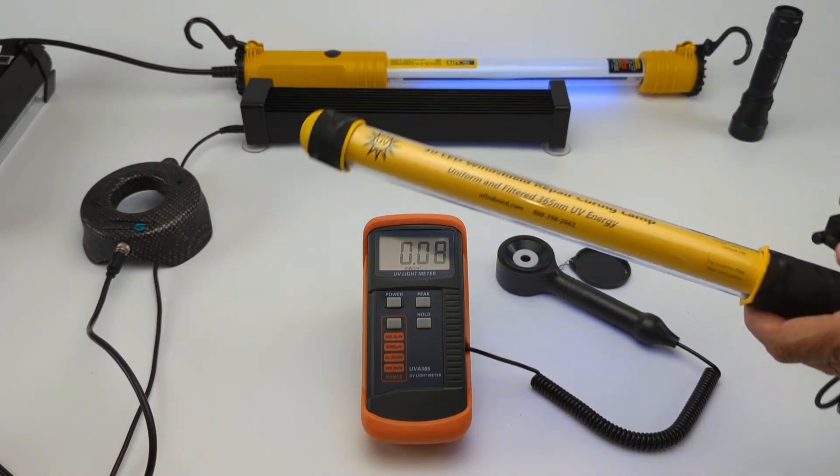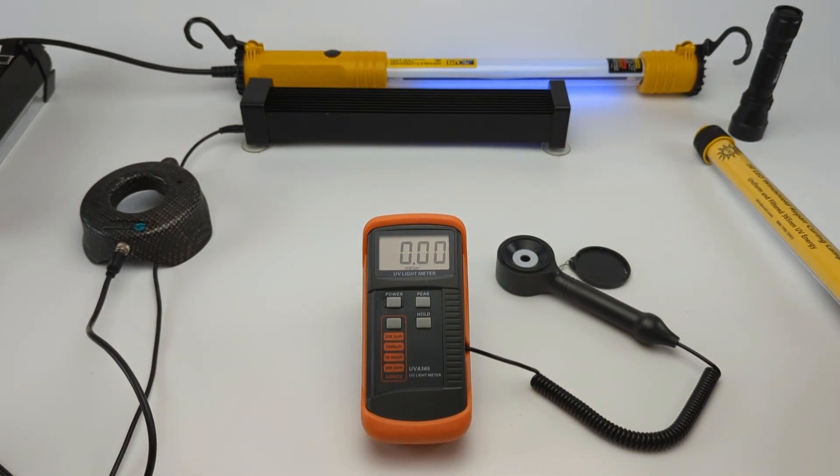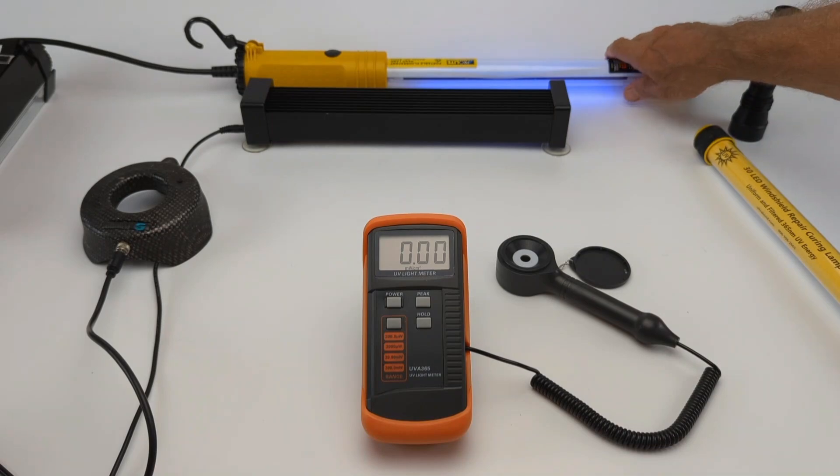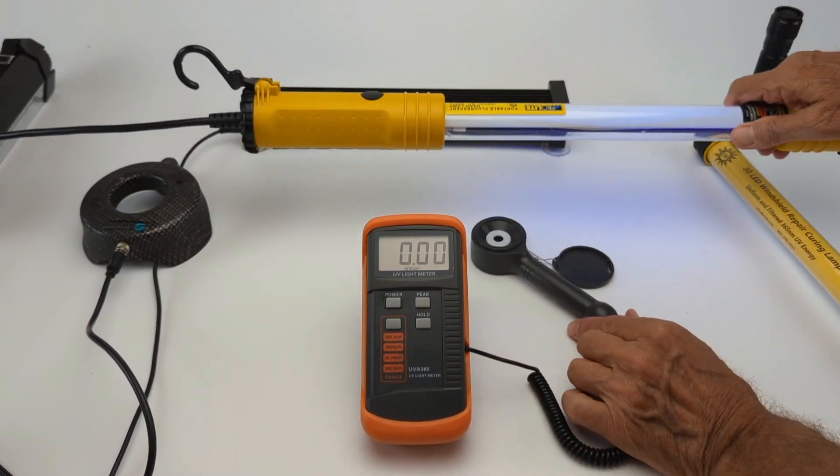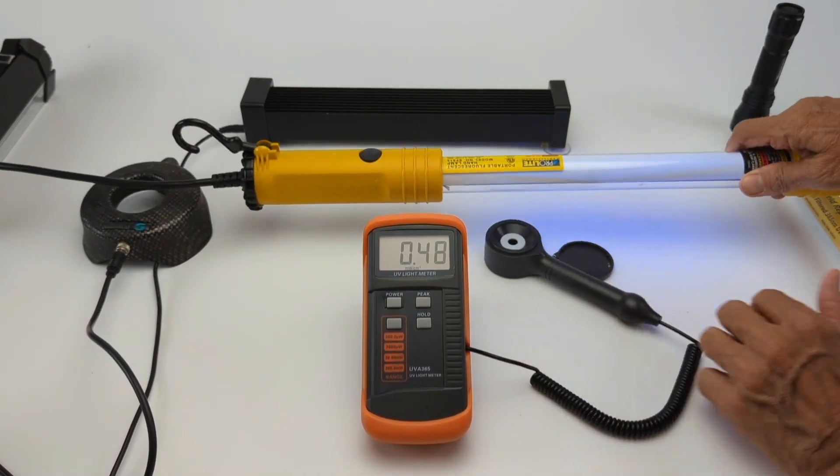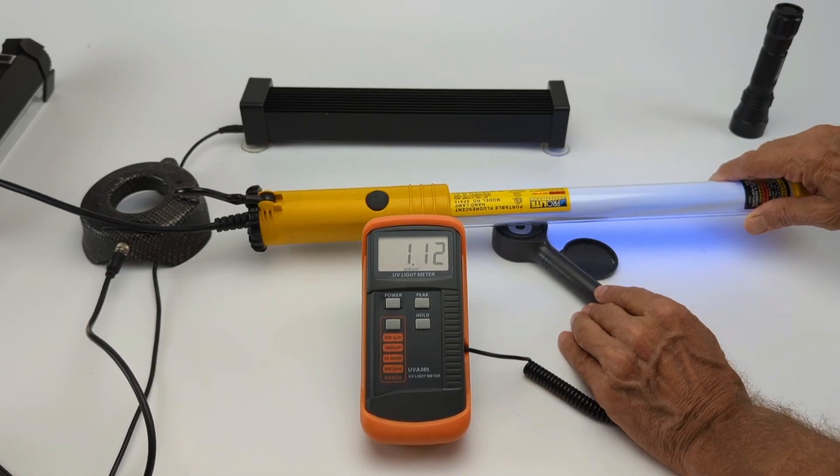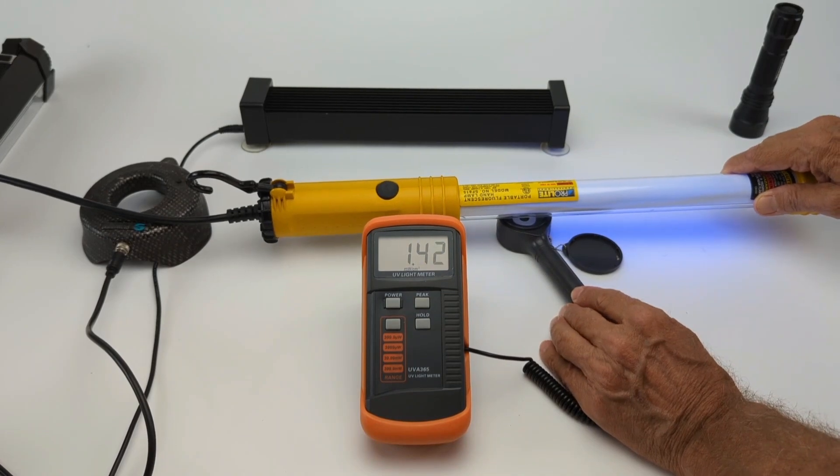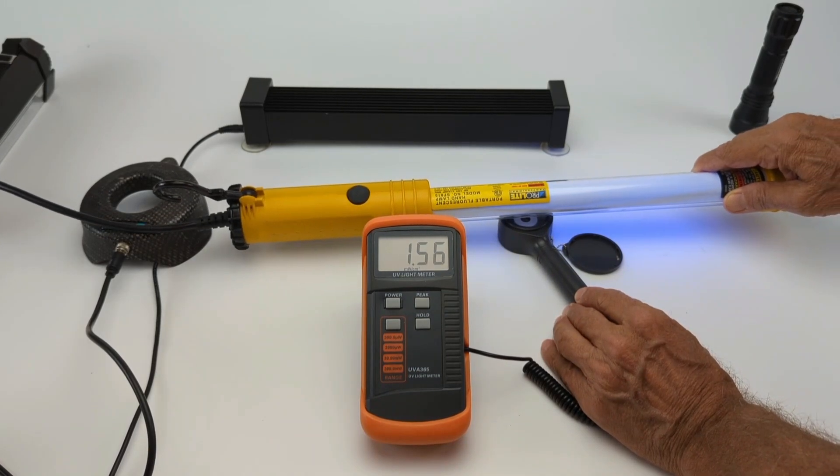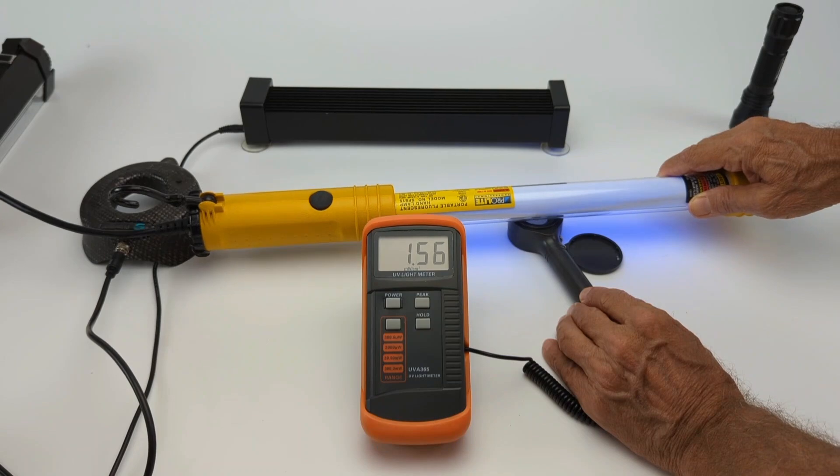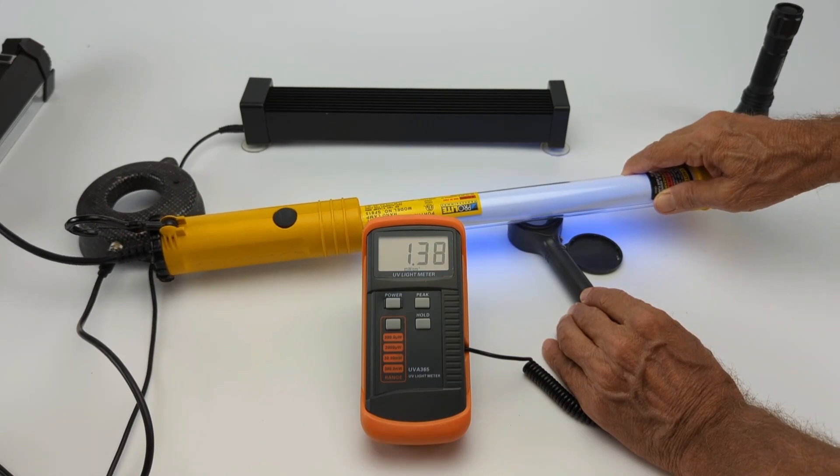So that is the LED light on the market that is as good as a fluorescent. Well, here is a fluorescent. Watch how it also gives off uniform energy as we go across it. Now, this is a little less powerful than that LED, but it still cures in one to two minutes.